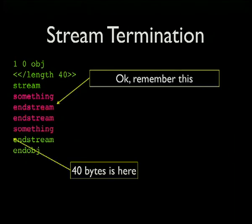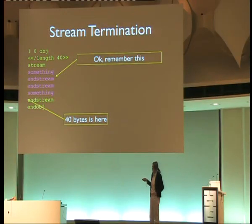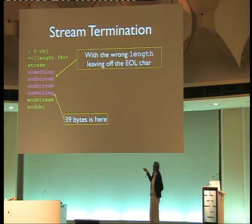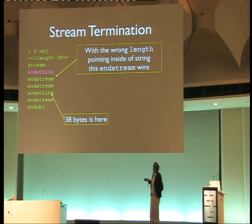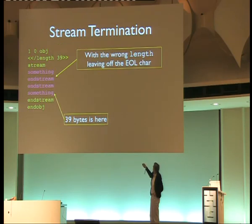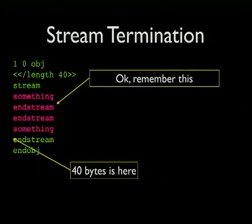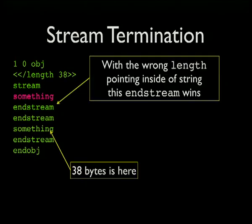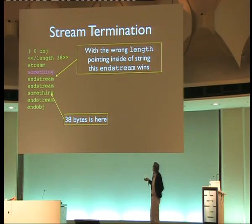The length field may or may not include the final line feed before the endstream. If you point to the line feed instead of the beginning of endstream, that's fine — they're equivalent. Acrobat appears to be looking for the endstream being one or two bytes away from where the length points. If you end up more than that, it falls back to using that position as the end of the stream.